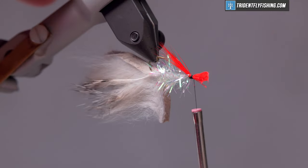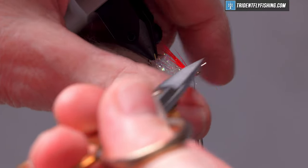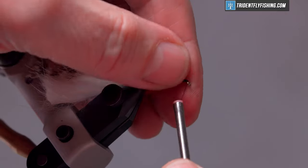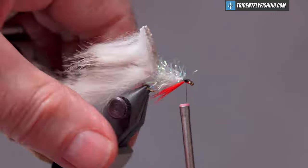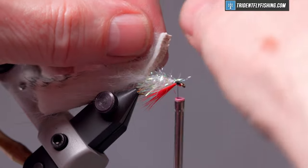Cut off our excess material. And all that remains is to tie in the last of the zonker strip here.